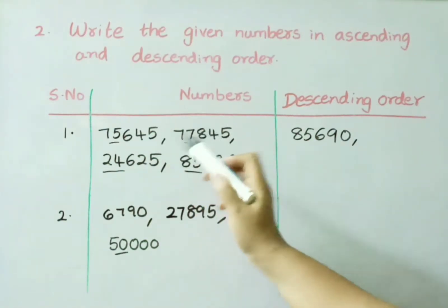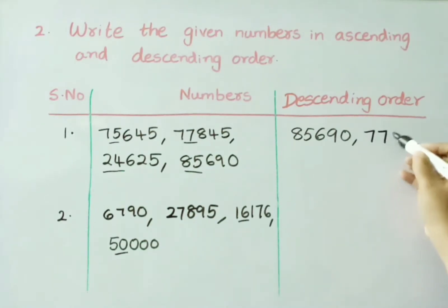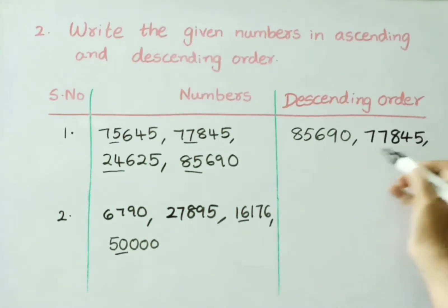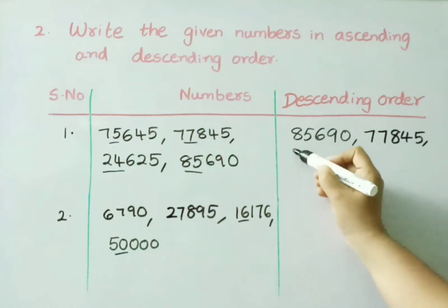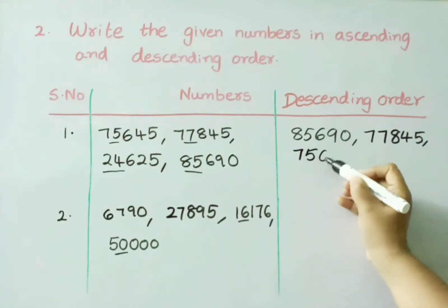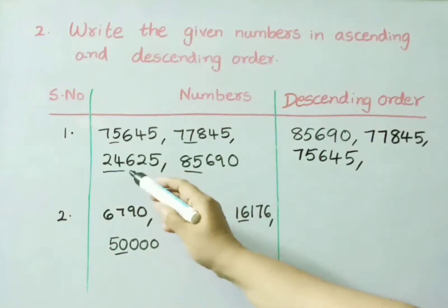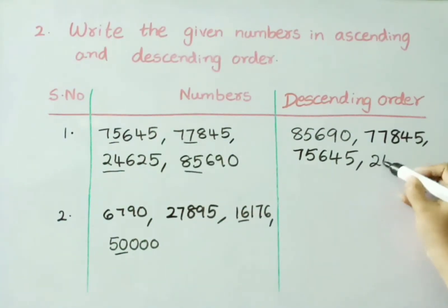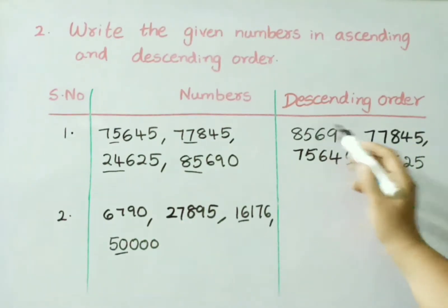Next highest value — among 75, 77 and 24, which one? 77,000 value. So, write that: 77,845. Next one: 75,000 and 24,000 — which is highest among those two? 75,000 value. So, write 75,645. And the last leftover value is 24,625. We have arranged these numbers from greatest to smallest.